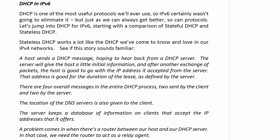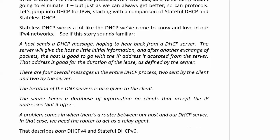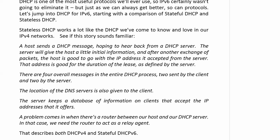The location of the DNS servers is also given to the client. The server keeps a database of information on clients that accept the IP addresses it offers, and a problem comes in when there's a router between our host and our DHCP server — in that case we need the router to act as a relay agent. All that should sound really familiar, and not only does it describe DHCP version 4, it also describes stateful DHCP version 6.